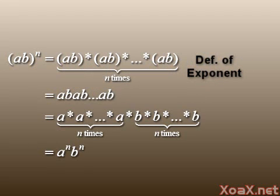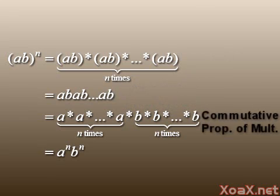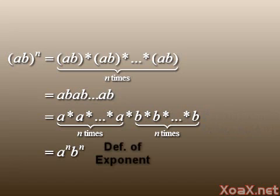To see this, we start with the left side and expand this to a b multiplied by itself n times using the definition of exponent. We can then remove the parentheses by the associative property. Using commutativity, we can put all the a terms to the front and the b terms to the back. Finally, we use the definition of exponent to finish the proof.